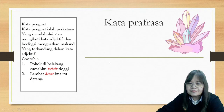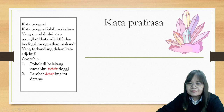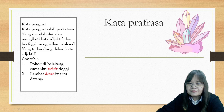Seterusnya kita tengok kata penguat. Apa itu kata penguat? Kata penguat ialah perkataan yang mendahului ataupun mengikuti kata adjektif dan berfungsi menguatkan maksud yang terkandung dalam kata adjektif. Kita analisis ayat ini: 'pokok' ialah kata nama, 'rumah' pun kata nama, tetapi 'tinggi' adalah kata adjektif. Jadi, 'pokok di belakang rumahku terlalu tinggi' - 'terlalu' berfungsi sebagai kata penguat kepada kata adjektif 'tinggi'. Kalau cikgu kata 'pokok di belakang rumahku tinggi', dia biasa sahaja. Kalau kita gunakan 'terlalu', dia sudah menguatkan maksud ketinggian itu.